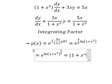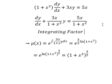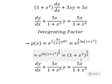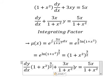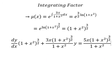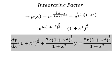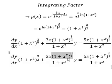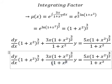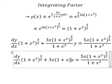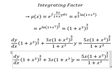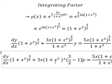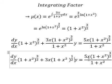And we can simplify this, which means we multiply both sides by this integrating factor. Next, we can simplify — this term gives us (1 + x²) to the power of 1, so 3/2 minus 1 gives us 1/2. That is, 3/2 minus 1 equals 1/2, and similarly for the second term.